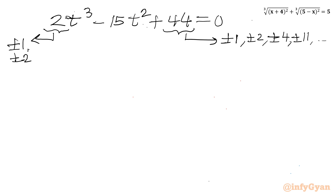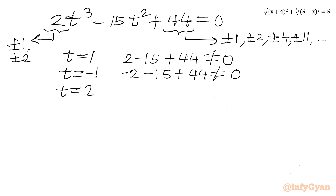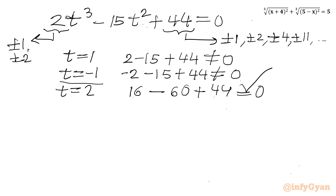Considering the ratio of constant to leading coefficient, let us try t equal to 1: we get 2 minus 15 plus 44, which does not give 0. Let us try t equal to minus 1: minus 2 minus 15 plus 44, again not 0. Let us try t equal to 2: 2 times 8 equals 16, minus 15 times 4 equals 60, plus 44. So 16 minus 60 plus 44 equals 0. Yes! So t equal to 2 is a solution.